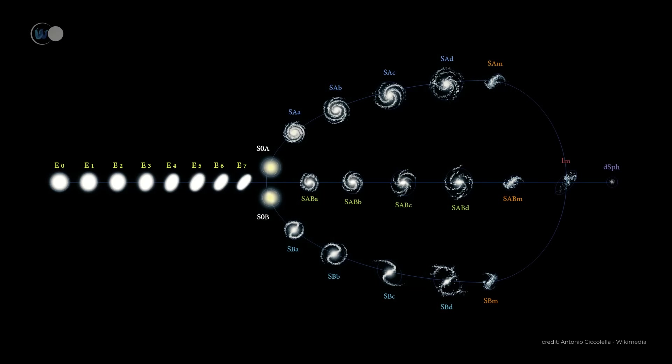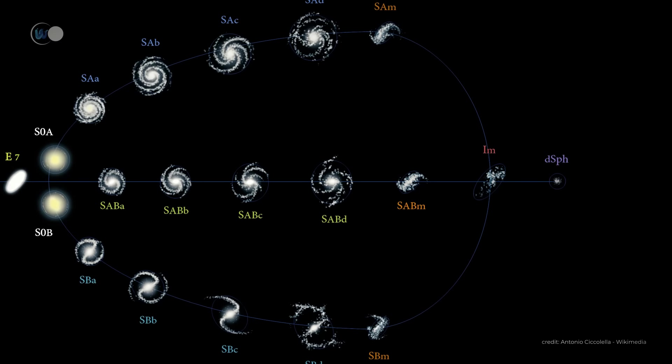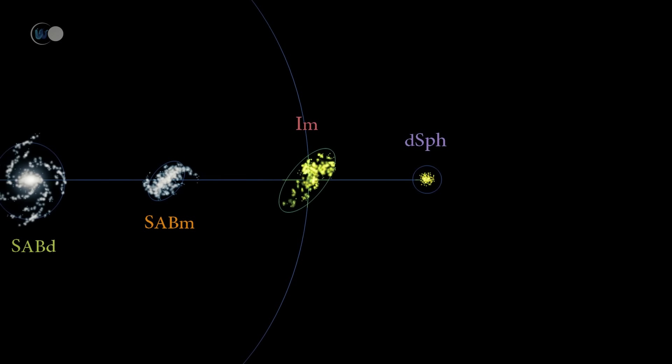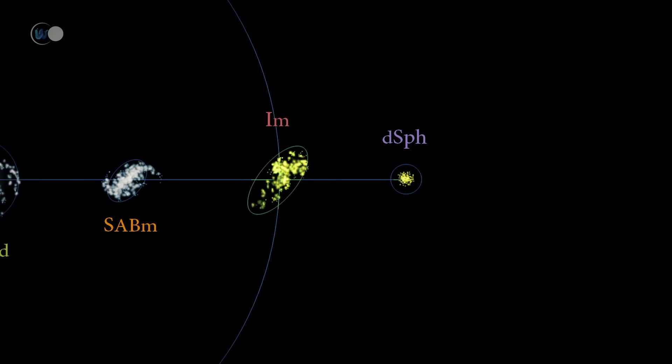Finally, irregular galaxies, the last type of galaxy, are much less massive and contain young stars.